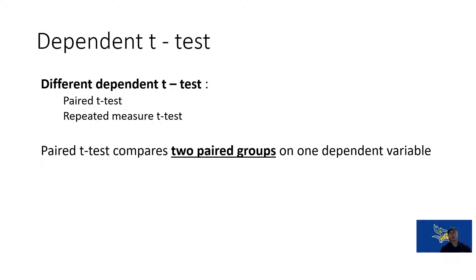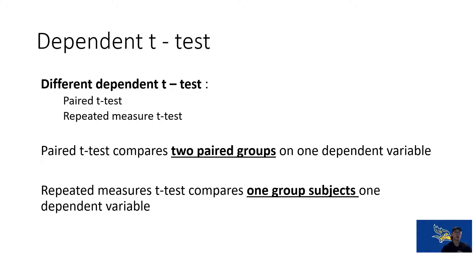These are two paired groups on one dependent variable. The groups are not separated from each other — they're either the same subjects with a repeated test or repeated measure, or they're paired based on something similar between the groups. Something is relating these populations together and we're seeing how those two groups differ on that dependent variable.